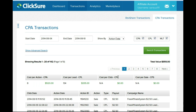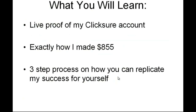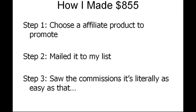Now that you've seen the proof, let's go back to the slideshow where I can show you exactly how I did this. It's a very simple process — really easy. Step one: I chose an affiliate product to promote from the ClickBank marketplace. Step two: I mailed it to my list. Step three: I saw the commissions coming into my account. It doesn't get any easier than that.